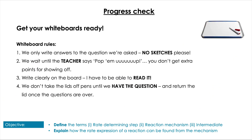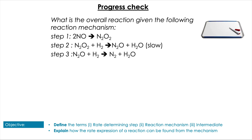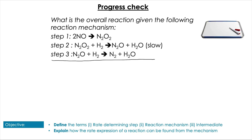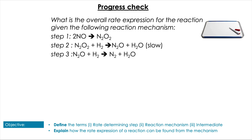Time for a couple of questions before we move on. First question: what is the overall reaction given the following mechanism? Pause the video and have a go. For our overall equation, we cancel things on opposite sides — reactants and products — and add things on the same side. So we get 2NO + 2H2 → N2 + 2H2O.